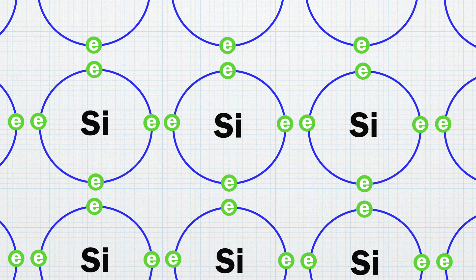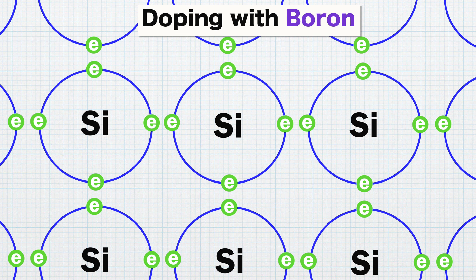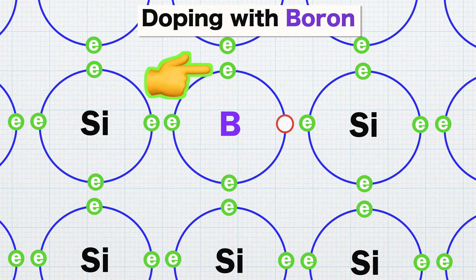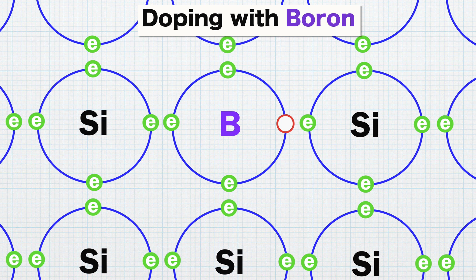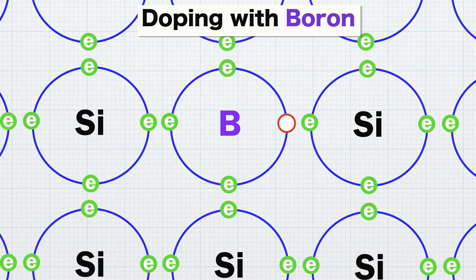If an impurity atom has three valence electrons, such as boron, it then binds with three adjacent silicon atoms and forms a hole where the electron of the fourth silicon has nothing to bind to. The absence of an electron creates a positive charge.